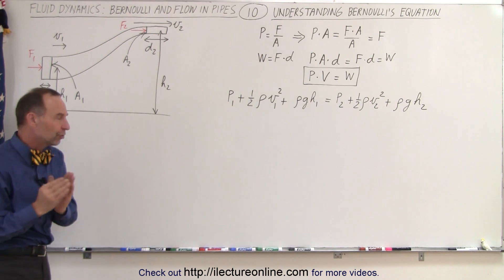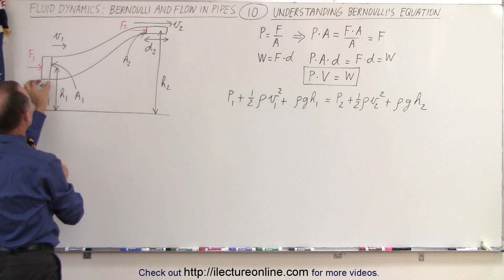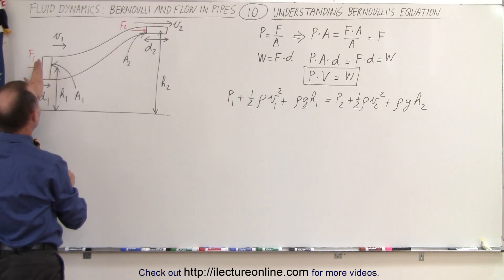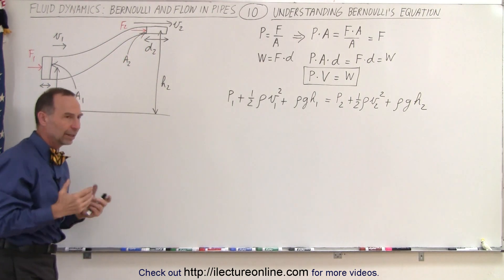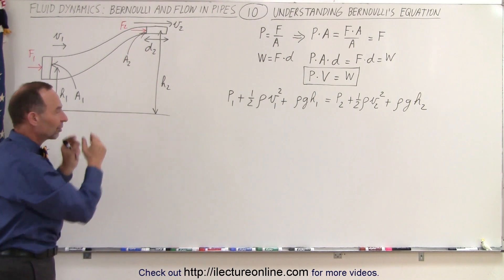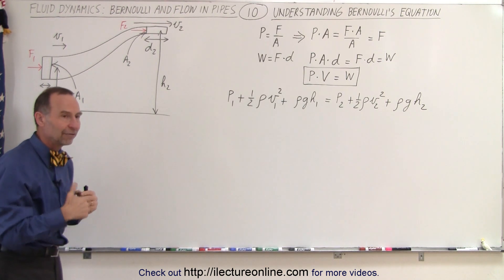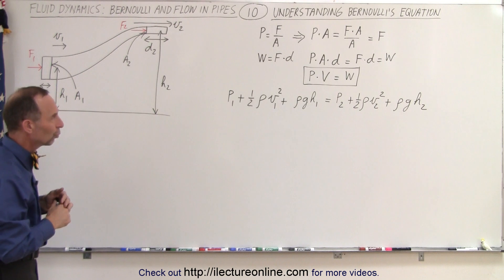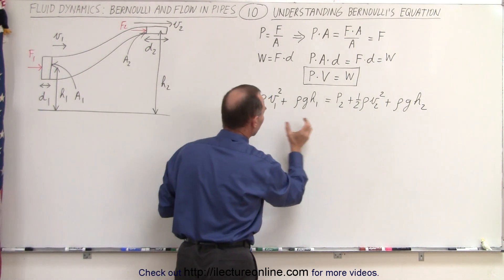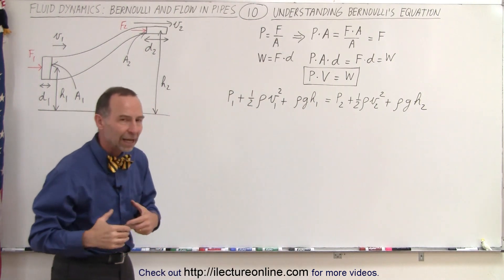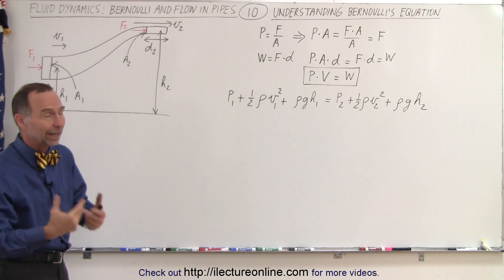If we take a small section of the pipe, we know that we're applying a force over a certain distance to push the fluid from one location to another, and the same thing happens at the other end. As the fluid travels at some velocity, it will have kinetic energy, and as it travels at different heights, it will have higher or lower potential energy as well. So Bernoulli's equation is written such that each term represents pressure, but we can convert that equation so that each term represents either work or energy.